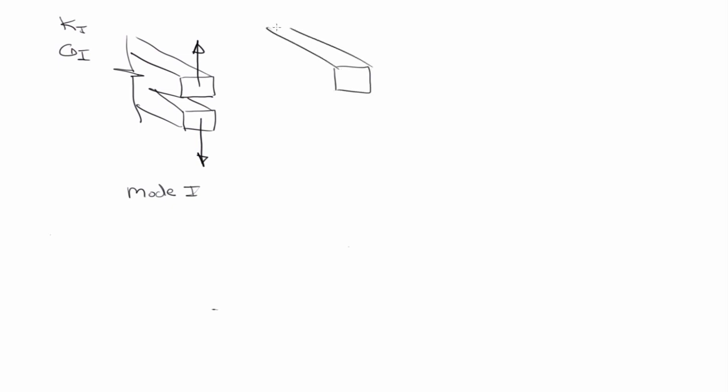Mode II is when the crack faces are loaded in pure shear. This is the secondary mode we deal with in hydraulic fracturing. Mode I is obvious — the crack faces are being loaded with fluid pressure, so that portion is strictly Mode I. But we also see Mode II when we induce slip on a natural fracture; that induces a Mode II motion and the crack can extend because of that.